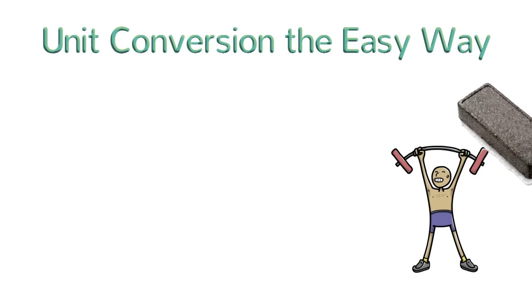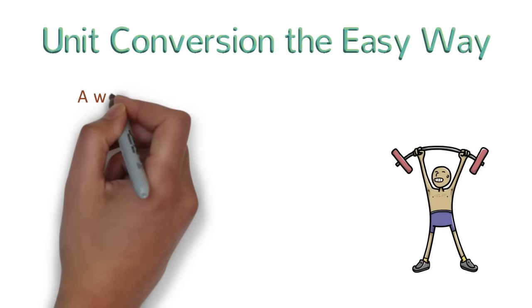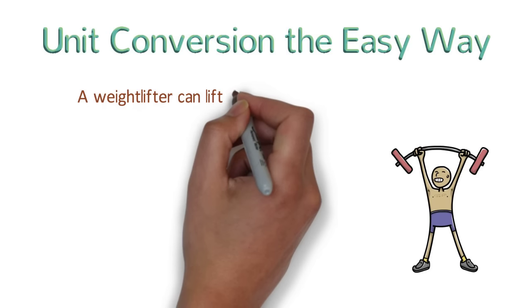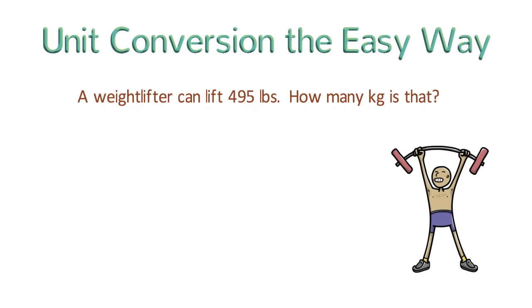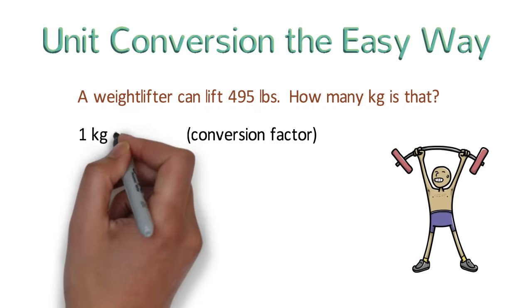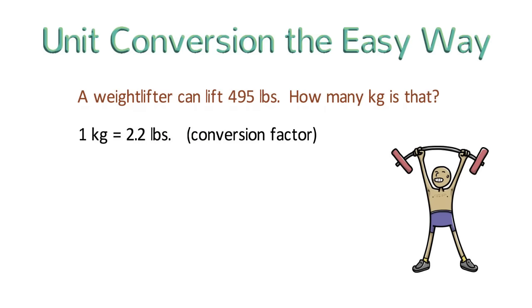We're going to start with a simple unit conversion problem. A weightlifter can lift 495 pounds. How many kilograms is that? In order to solve a unit conversion problem like this, we first need one more piece of information, the conversion factor. For pounds and kilograms, the conversion factor is 1 kilogram equals 2.2 pounds. Now we're ready to solve this.